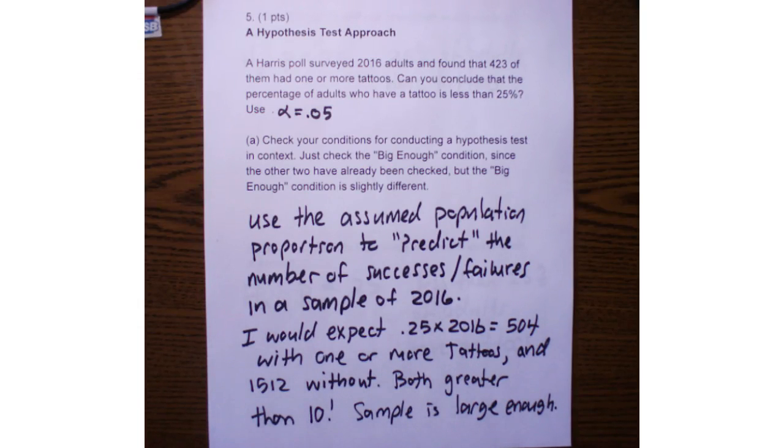When we check conditions, we've already checked the randomization condition that the 2016 adults were randomly sampled. And certainly that sample is not too big. 2016 adults is certainly less than 10% of all adults.